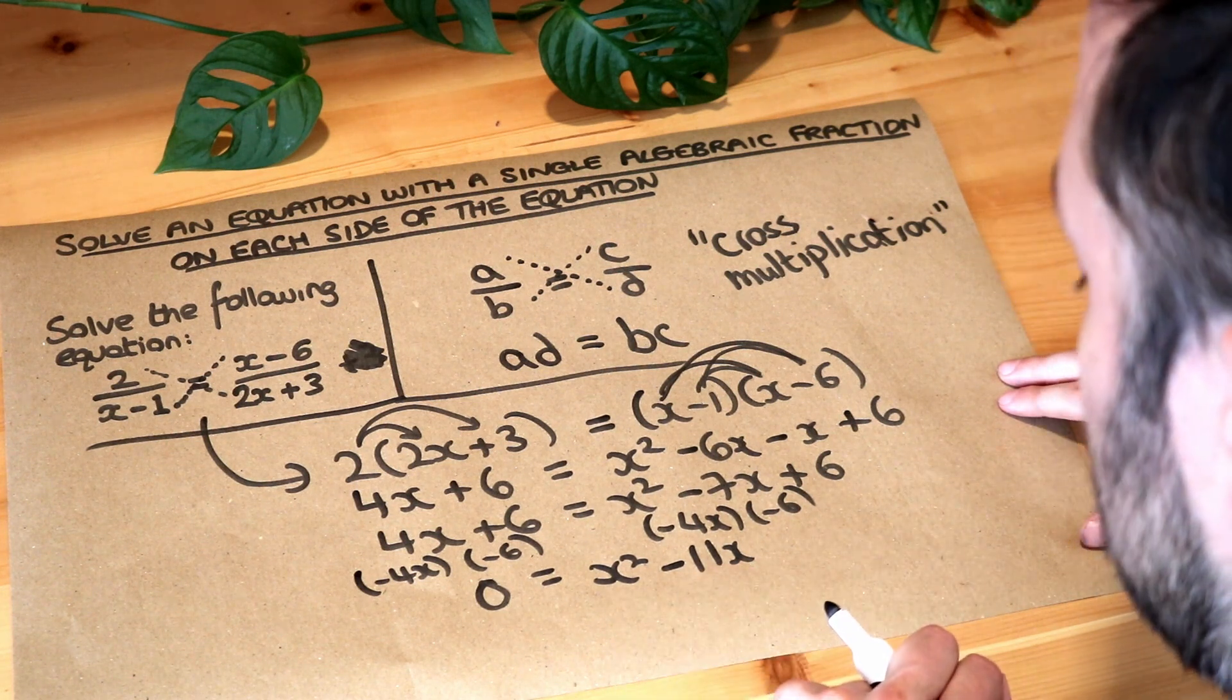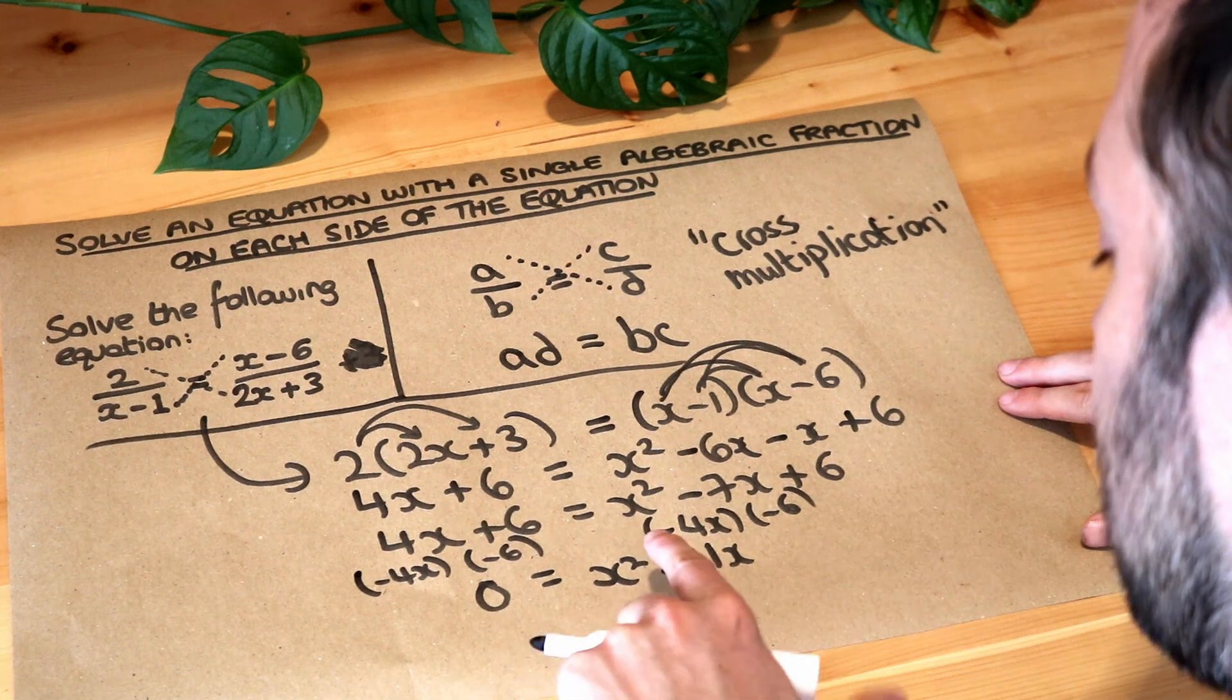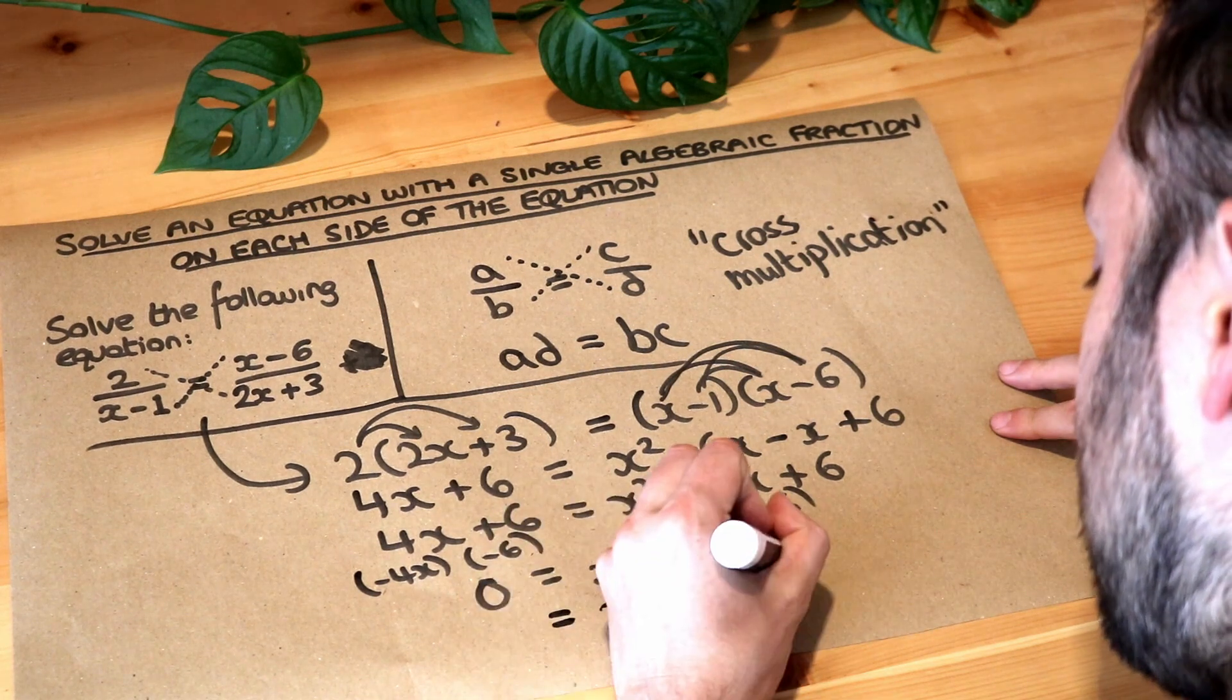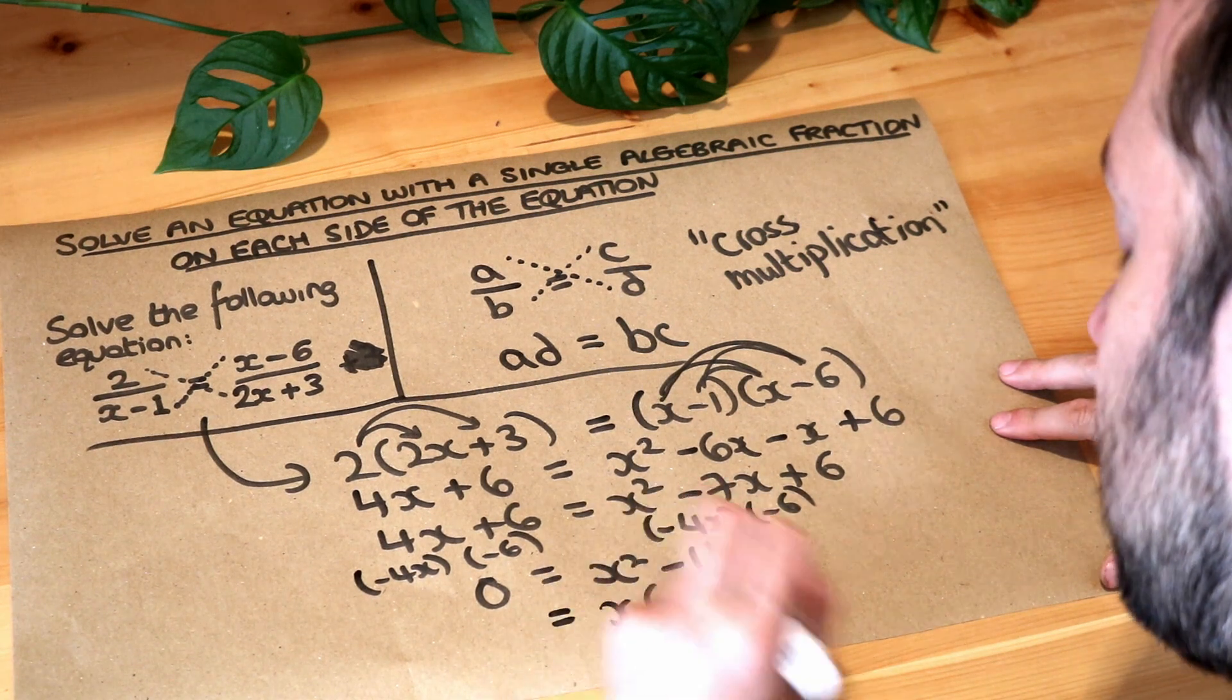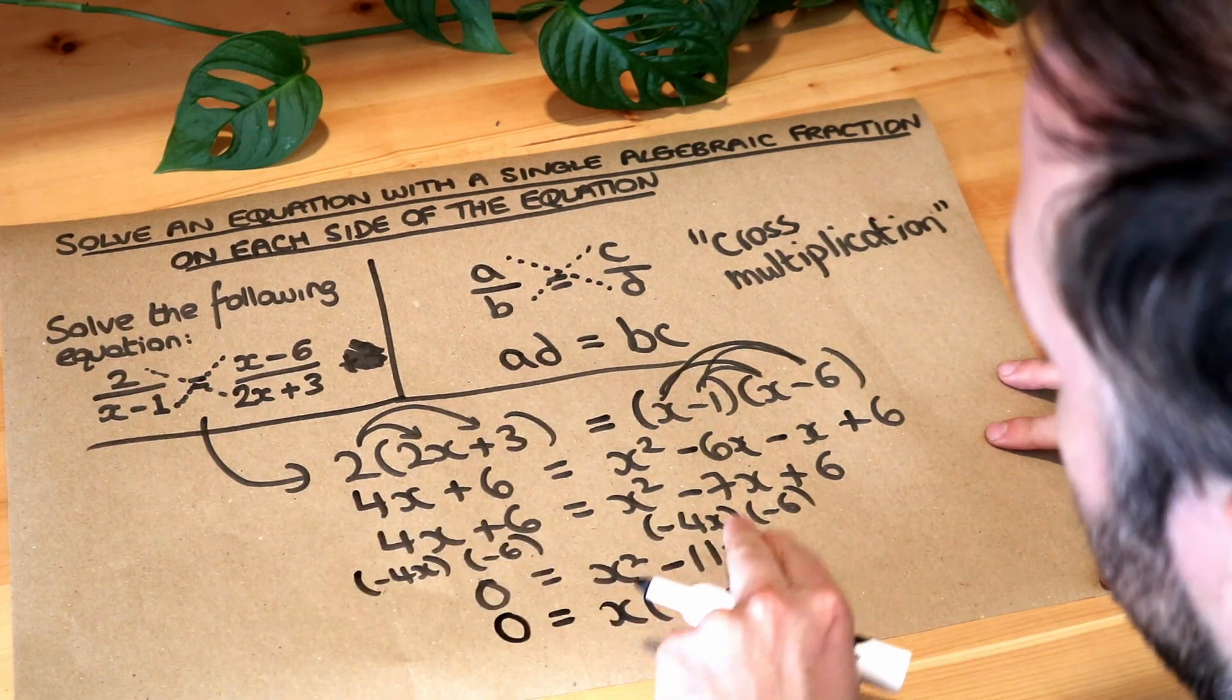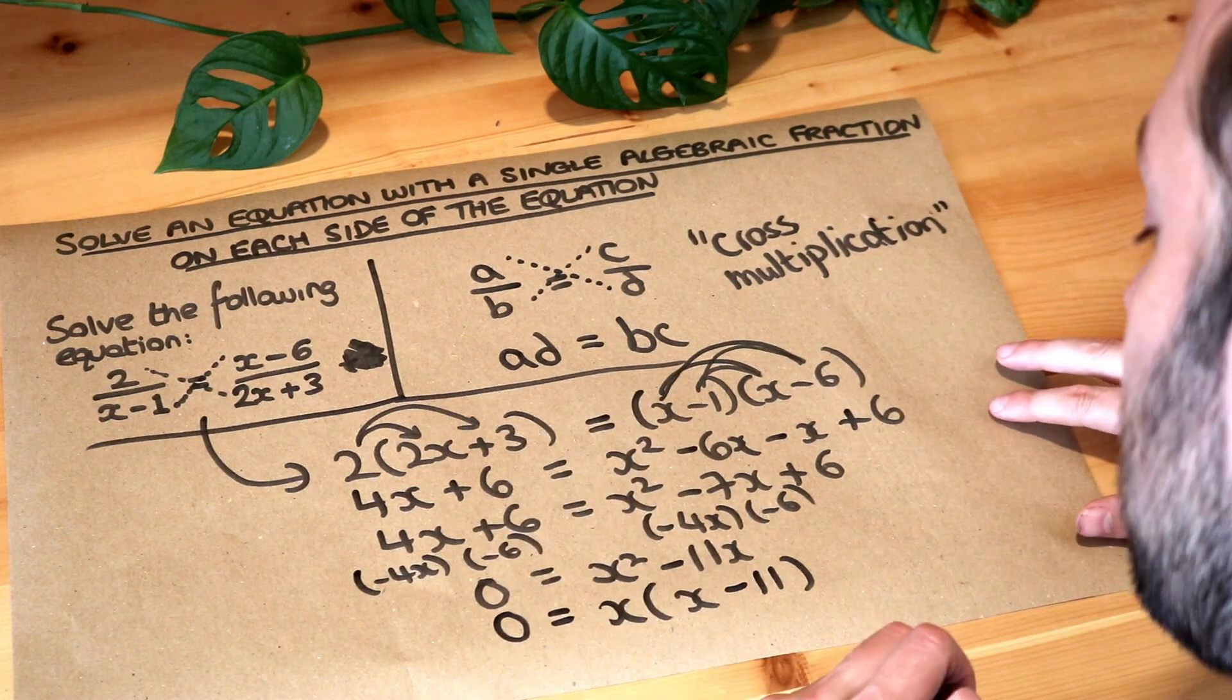Now to factorize this quadratic it's not going to be two brackets. Can you see that when I factorize this both these terms have x in common, so I can factorize out the x, it's actually a single bracket factorization. x times what is x squared? It's x. x times what is minus 11x? It's minus 11. And if you're not familiar with how you solve these kind of equations then please look at my previous videos on solving quadratic equations.